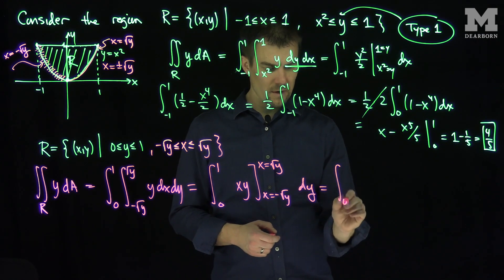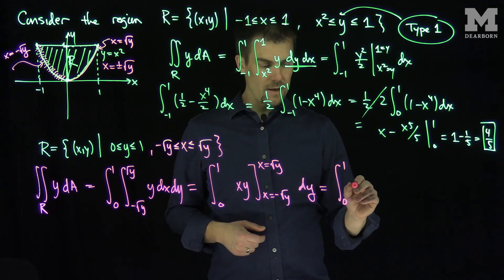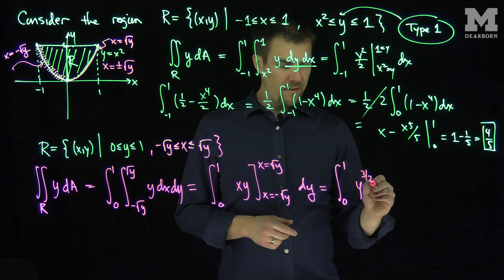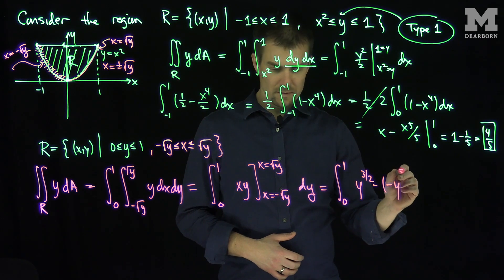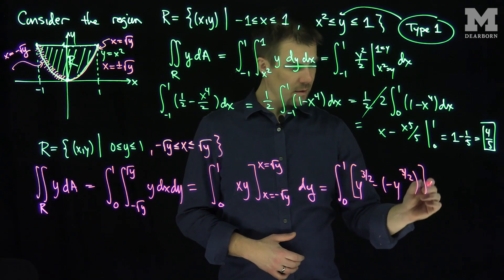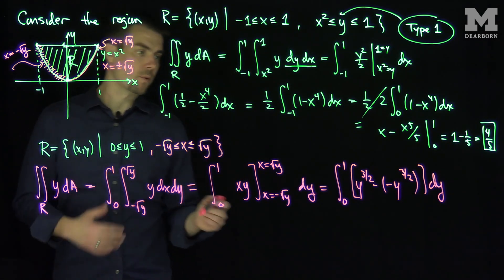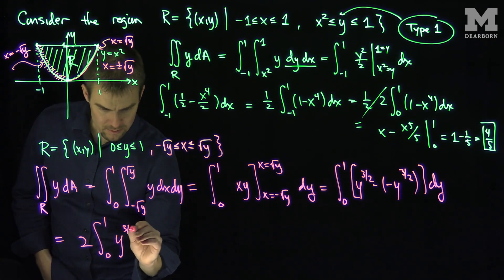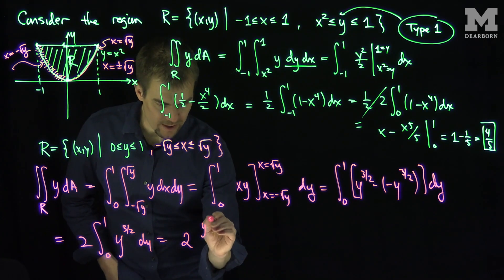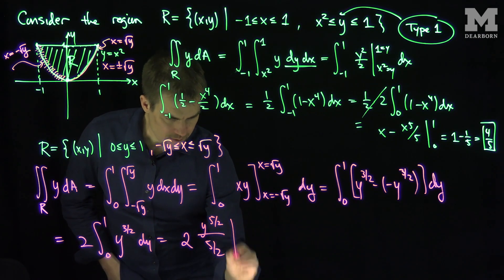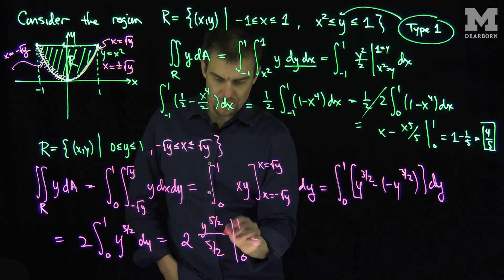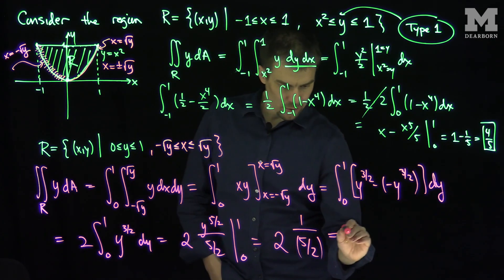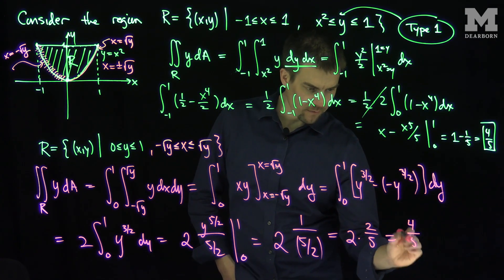So this is going to be the integral from 0 to 1. When x is root y, I get y to the one-half times y, which is y to the three-halves. Then minus minus y to the three-halves dy. So all total I have 2 times y to the three-halves, giving me 2 times the integral from 0 to 1 of y to the three-halves power dy. That's 2 times y to the five-halves divided by five-halves, from 0 to 1, which gives 2 times 1 over five-halves, which is 2 times 2 over 5, which is 4 over 5.